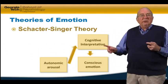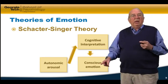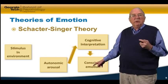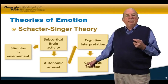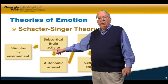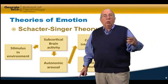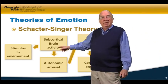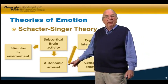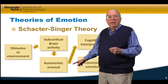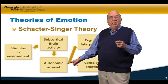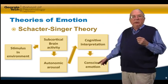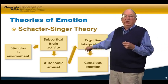There is also the Schachter-Singer theory, which says the autonomic arousal produces a cognitive interpretation, and that cognitive interpretation is what really produces the emotional state. In their model, the stimulus in the environment — like somebody walking through this door with a gun — causes the amygdala to become active, which produces autonomic arousal, but then the actual emotion felt is produced by the autonomic arousal causing a cognitive interpretation that produces the conscious emotion. So the Schachter-Singer theory adds this cognition into the model.